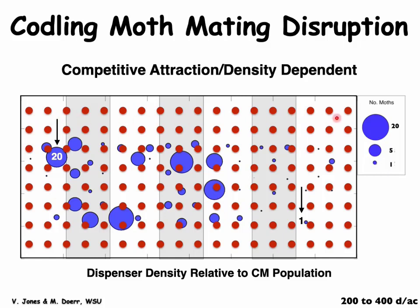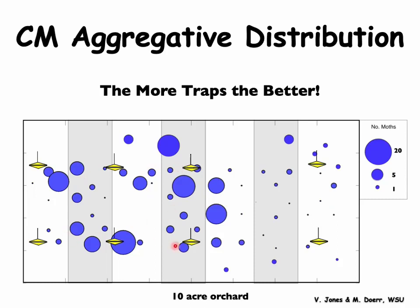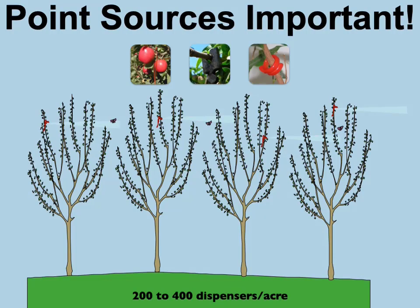From a graphic by Vince Jones and Mike Doerr, red dots represent pheromone dispensers and blue dots represent codling moth populations — with larger blue dots indicating higher populations. Where an arrow indicates 20 codling moths found in one location, the same number of dispensers is present as in a location with only one moth. Dispenser density relative to codling moth population is really important. The more traps, the better — you need to know where your hotspots are, where your low populations are, and trap with as many traps as you can manage. Two to four hundred dispensers per acre is really important for control of codling moth.